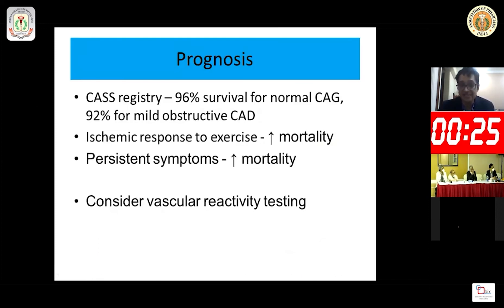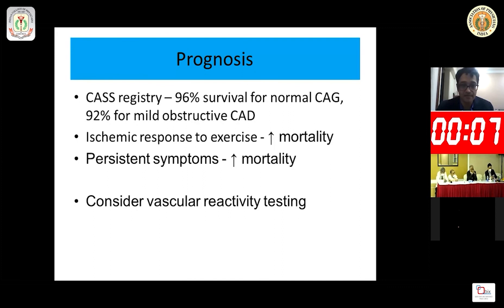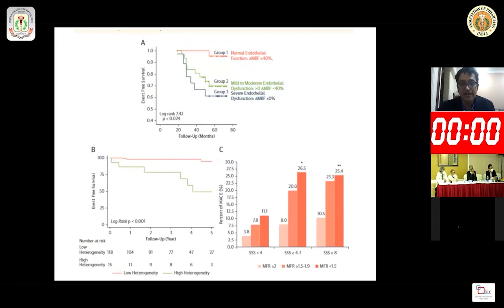Regarding prognosis, as per the CAST registry, there is 96% survival for a normal coronary angiogram and 92% for mild obstructive CAD. However, for patients with Syndrome X, the mortality rate is twice that of an absolutely normal individual. Persistent symptoms and ischemic response to exercise are both associated with higher mortality. Patients with normal endothelial function and good myocardial blood flow have good event-free survival, but with mild to moderate or severe endothelial dysfunction and reduced myocardial blood flow, event rates are significantly higher.